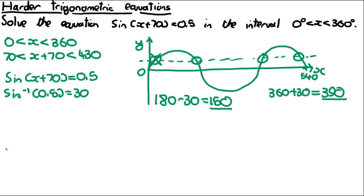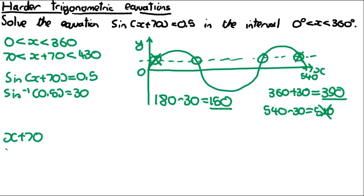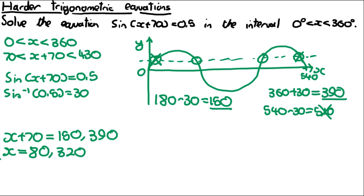The next candidate is 540 minus 30 = 510, but this is not within the interval of 70 to 430, so it's not a solution. We only have two solutions. Since x + 70 = 150 and 390, we subtract 70 from each: x equals 80 and 320. You can verify by substituting back to confirm these give 0.5.